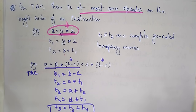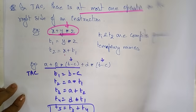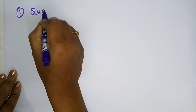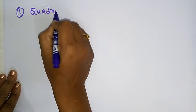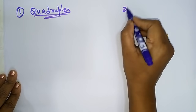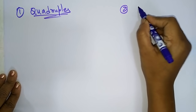This three address code representation is of different types. The two data structures for the three address code are: one is quadruples, and the next is triples.